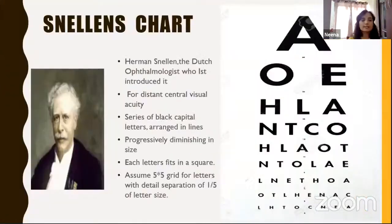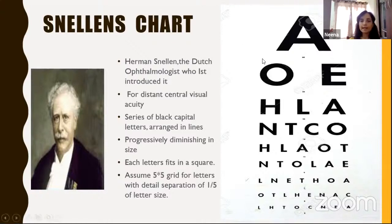Snellen's chart is probably the most common and most widely used visual acuity chart in ophthalmology. It was first developed by Herman Snellen, a Dutch ophthalmologist. It is used for testing distant visual acuity. It consists of a series of black capital letters arranged in lines, progressively diminishing in size, where each letter fits into a square with a detail separation of one-fifth letter size between the letters.